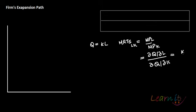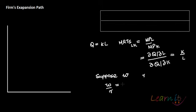Suppose W is the wage rate and R is the rental rate of capital. Your cost-minimizing input combination would be at a point where W/R is equal to K/L.